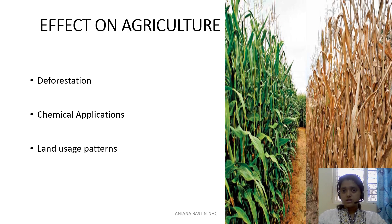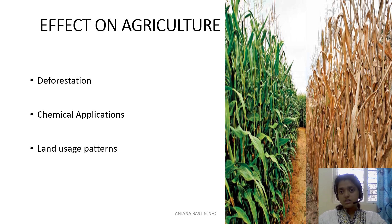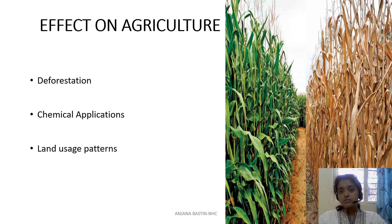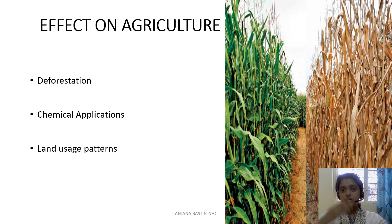Water vapor is the most abundant greenhouse gas and is not allowed to escape the atmospheric layer due to the concentration of other gases. Carbon dioxide is released from vehicles and fossil fuels when they are burnt — both carbon dioxide and carbon monoxide are released. Methane comes from livestock and nitrous oxide from fertilizers. These are the prominent greenhouse gases involved in climate change.